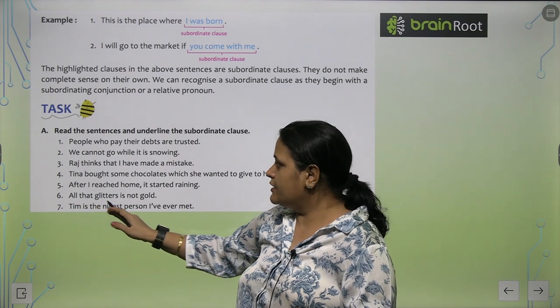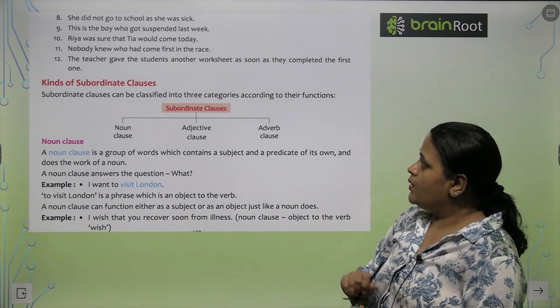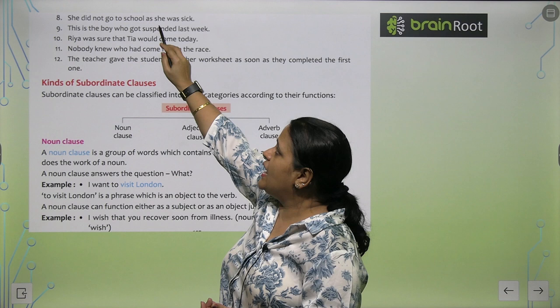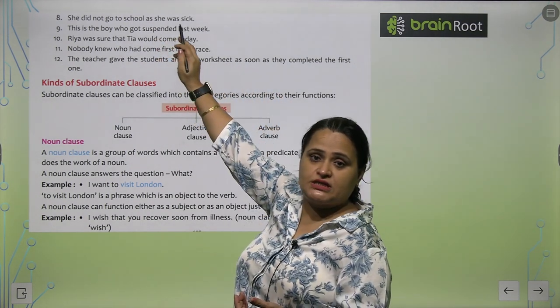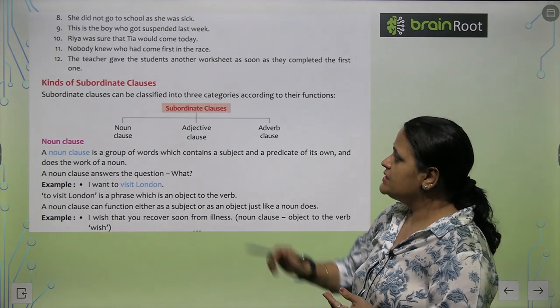So, that glitter is here subordinate clause. Now, she did not go to the school as she was sick was subordinated clause. Right?